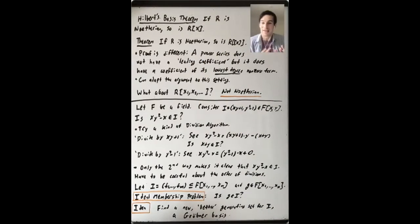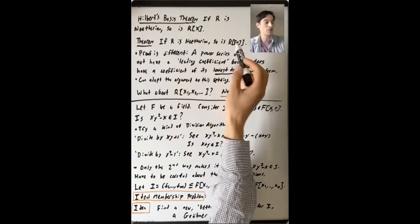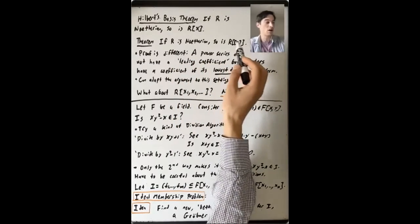Well, what else can you say in that direction? And the theorem that I want to highlight is that if R is Noetherian, then so is the power series ring R double bracket X.